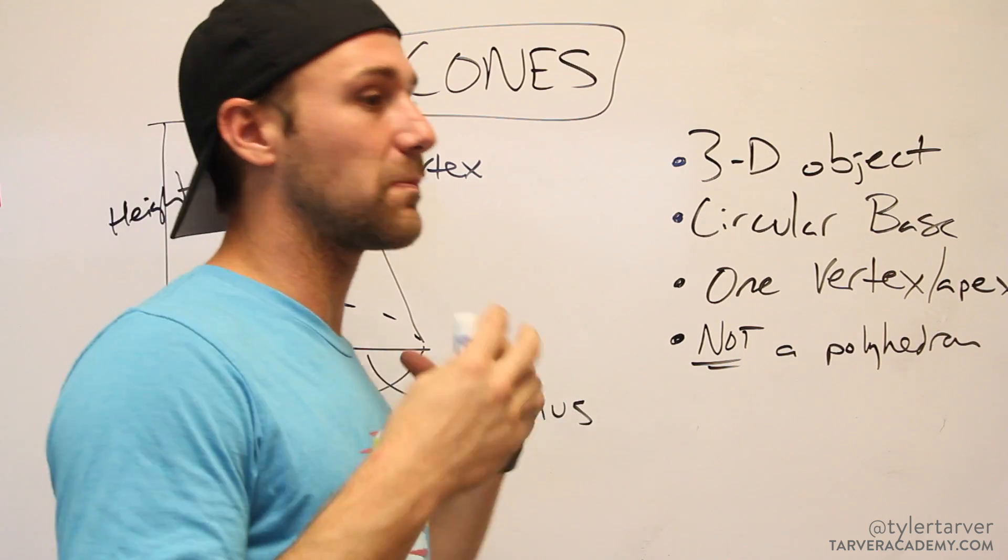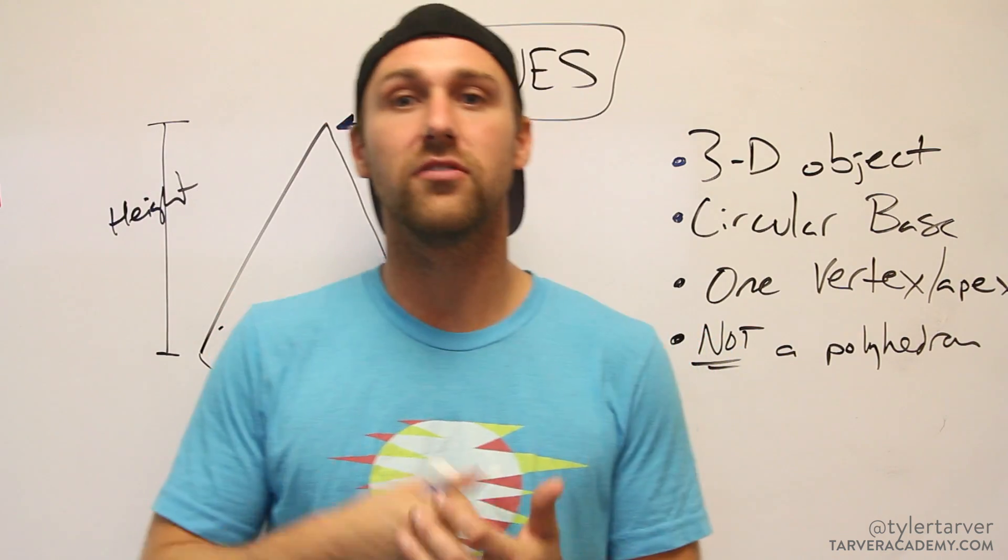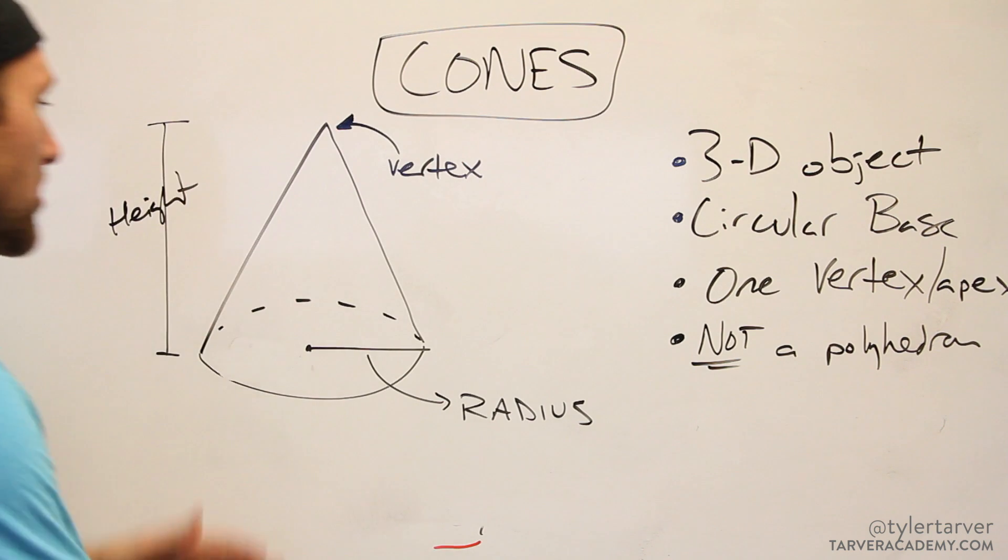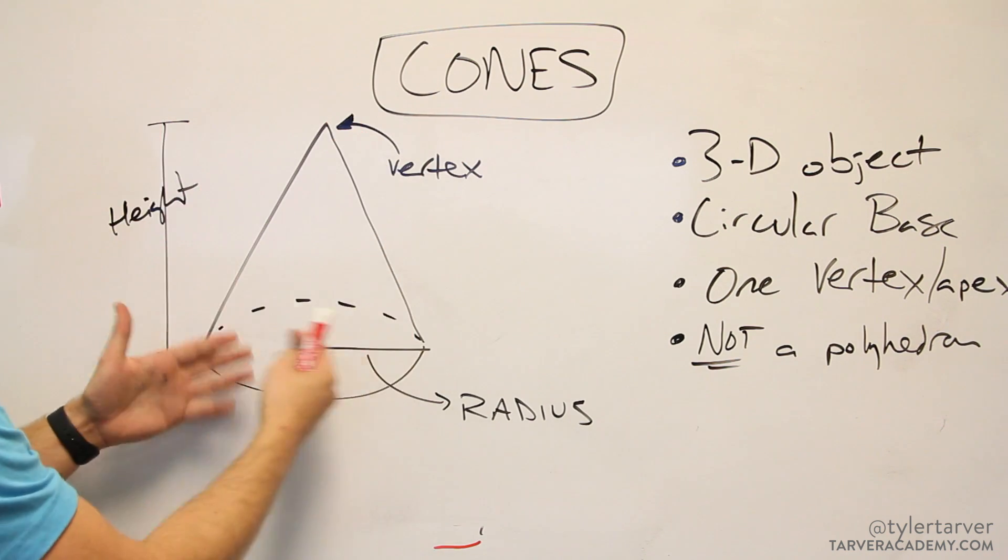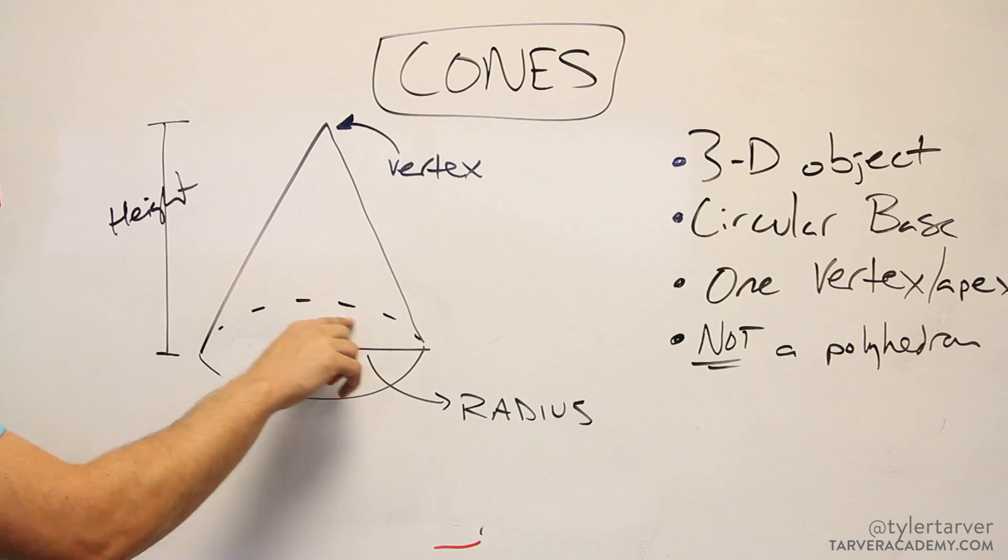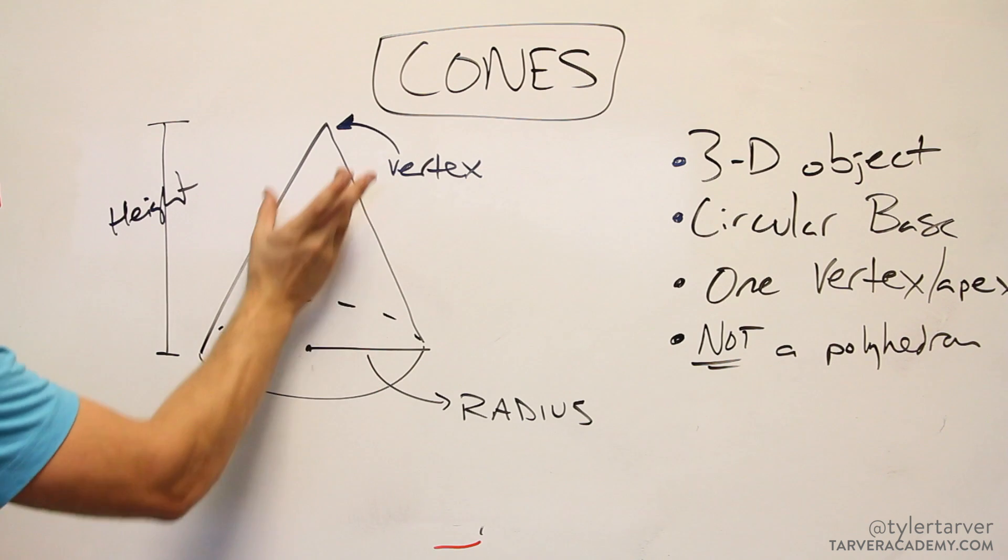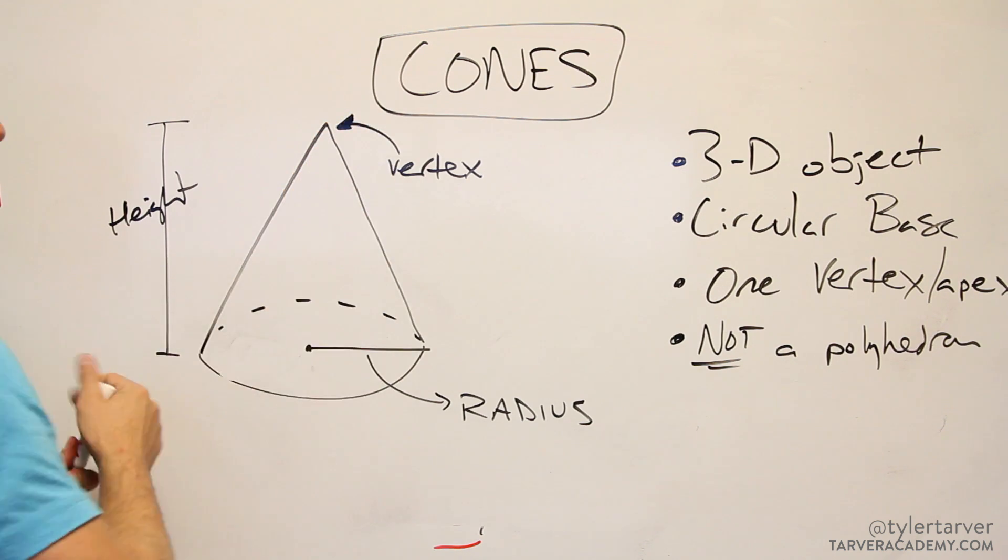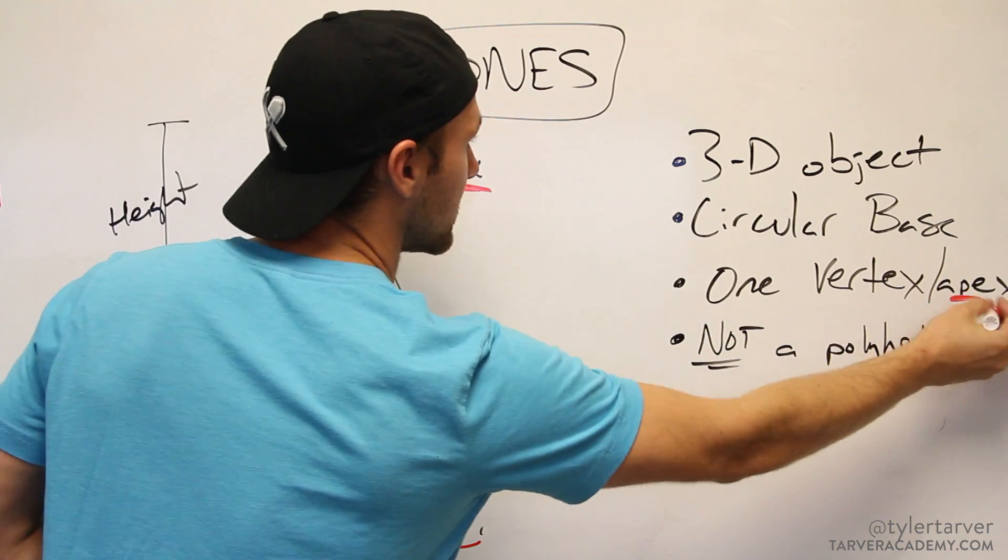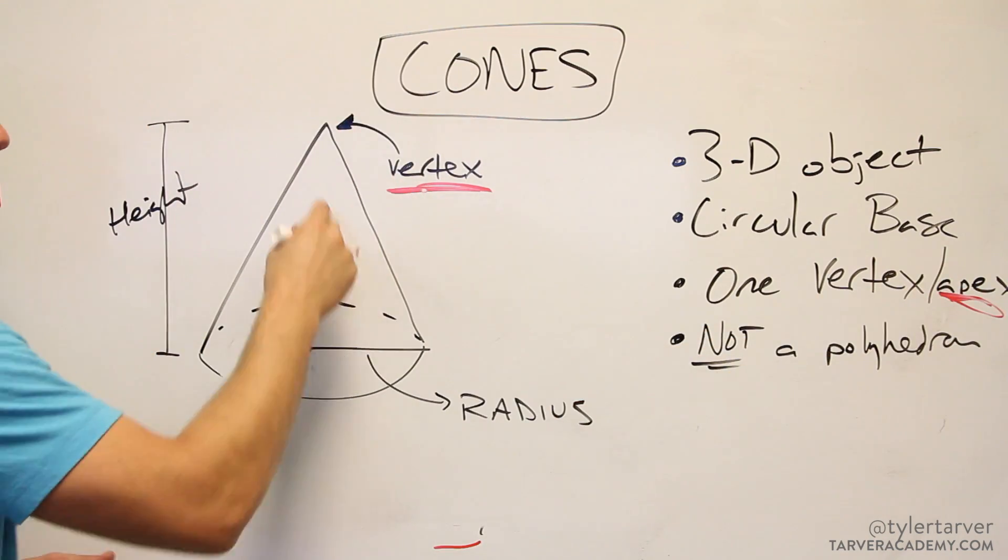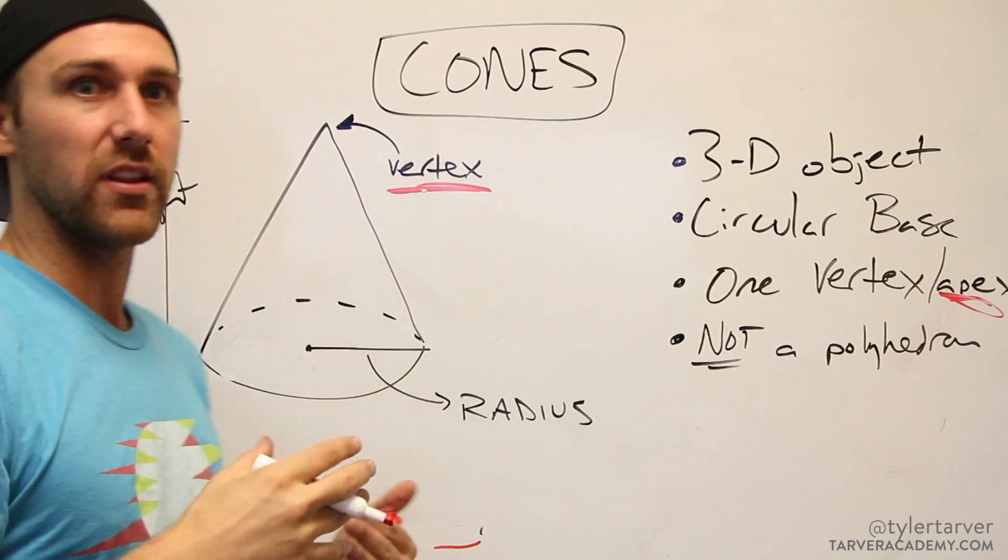So what we're doing is we're looking at some nice clean properties of cones. First off, here's my best representation of a cone in a drawing. I tried to make it look three-dimensional so I put the little dashes. You've got a circular base and then you want it to come up to a point which is your vertex.